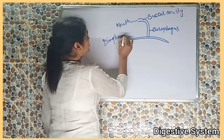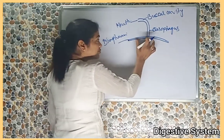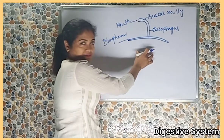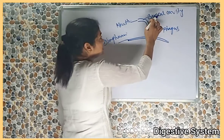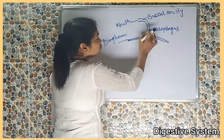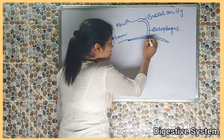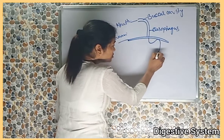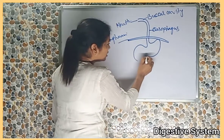This is the diaphragm. The diaphragm separates the abdominal cavity from the chest cavity. The esophagus is a long muscular tube which passes through the diaphragm and enters into the stomach.